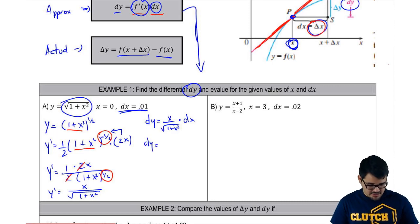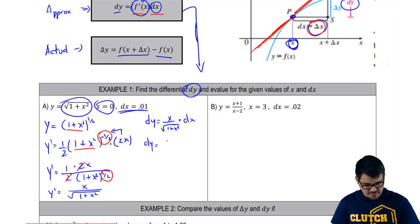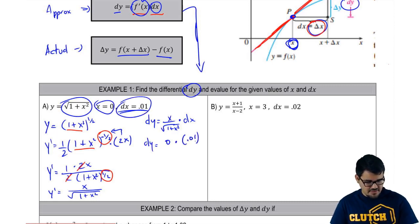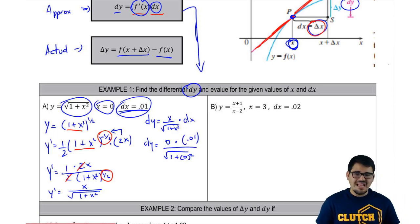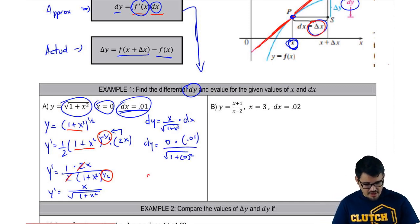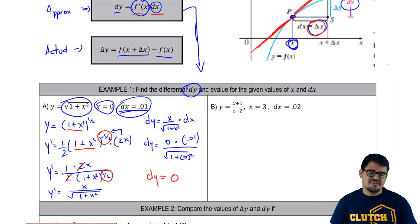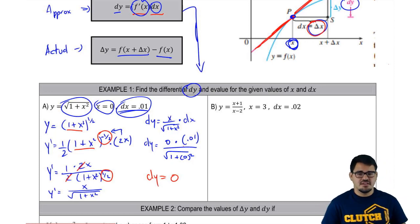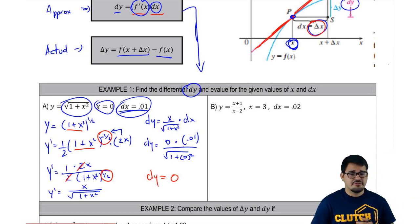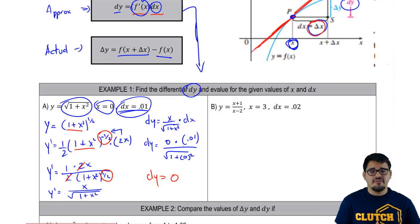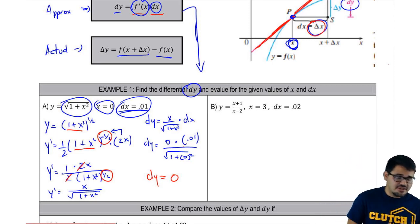Now it's just about plugging in. For x I have 0, and for dx I have 0.01. The denominator becomes the square root of 1 plus 0 squared. The answer to this dy is simply 0, because I have 0 times everything. So all I get is 0. That's all you have to do to find this differential — just multiply f prime of x times dx.